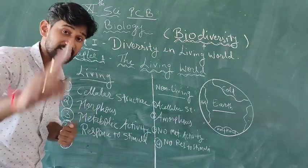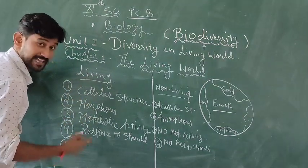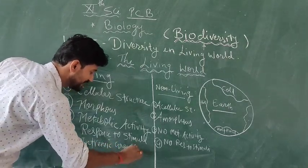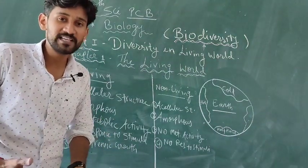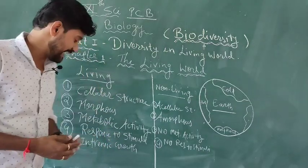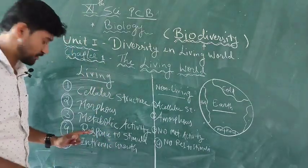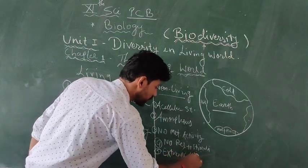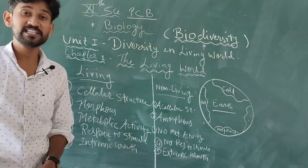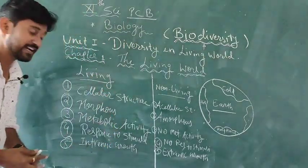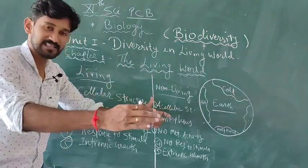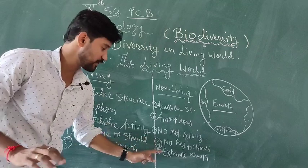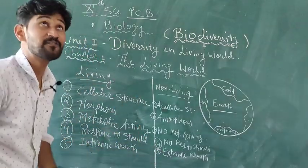The next definitive property of living organisms is growth, specifically intrinsic growth. Intrinsic growth means growth carried out from inside. In non-living things, there is extrinsic growth, which is growth by external deposition of matter, like a sand mound growing by accumulation. Intrinsic growth in living things is from the inside, not from external factors.